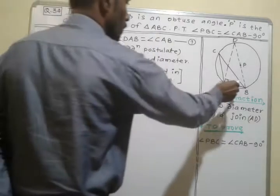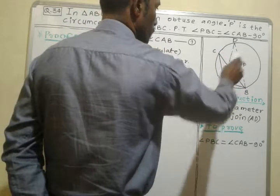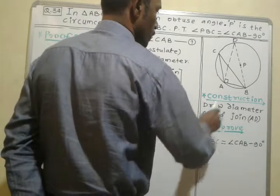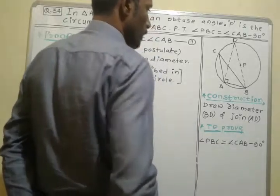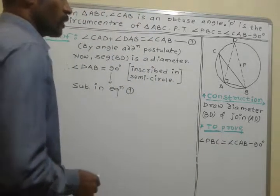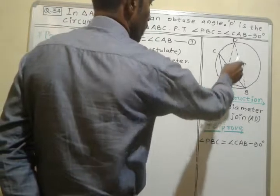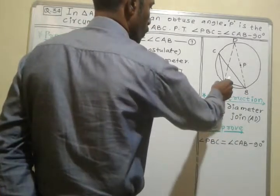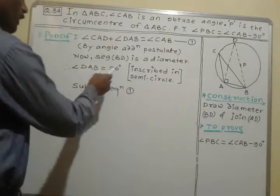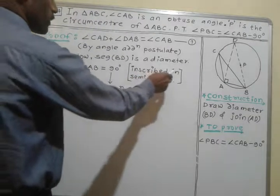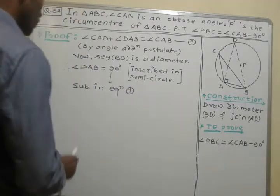Segment BD is the diameter of this circle and therefore arc BAD is a semicircular arc. An angle inscribed in a semicircular arc is always a right angle. Therefore, angle DAB is equal to 90 degrees.